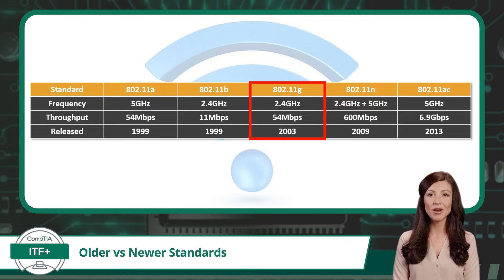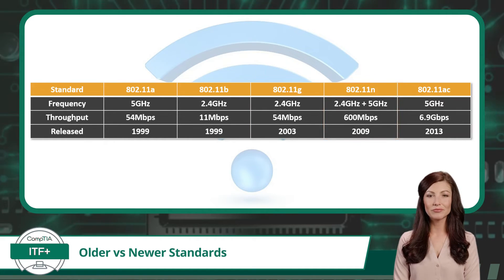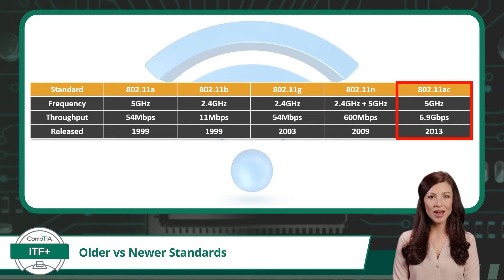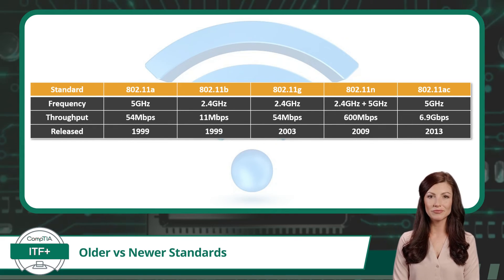It then took four more years before 802.11g was released. 802.11n came next with a 2009 release date. 802.11ac is the last standard covered on the CompTIA ITF+ exam, released in 2013. There are newer standards like 802.11ax, also referred to as Wi-Fi 6, but they are not part of our exam topics. And there you have it — the evolution of the 802.11 standards from oldest to newest.